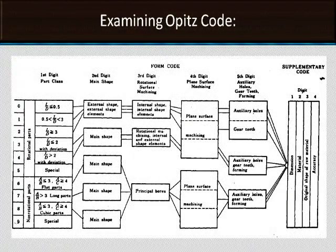I will now describe the OPEC coding and classification system using figures. For the first 5 digits (form code), suppose the part is a rotational part with a length-to-diameter ratio (L/D ratio) less than 0.5 — we use 0. If L/D is between 0.5 and 3, we use 1. If L/D is 3 or more, we use 2. Codes 0 through 5 are used in the first digit position for rotational parts based on L/D ratio.